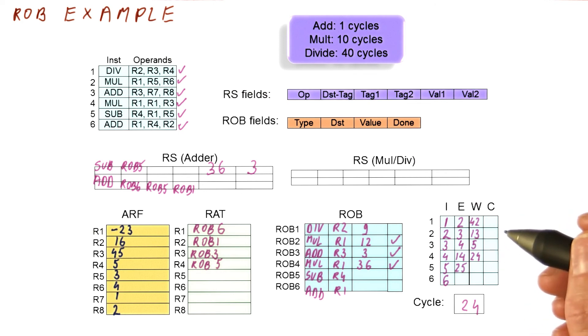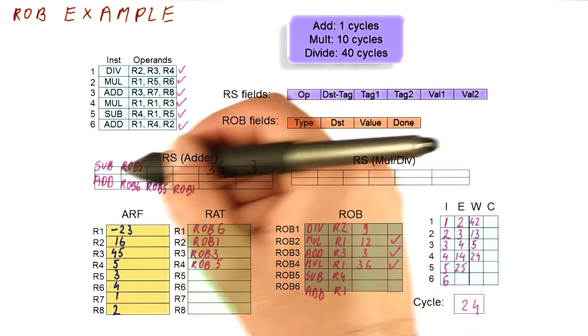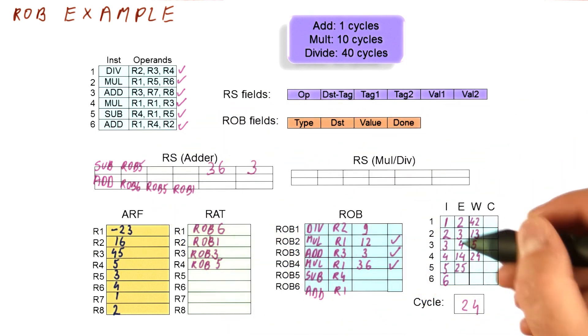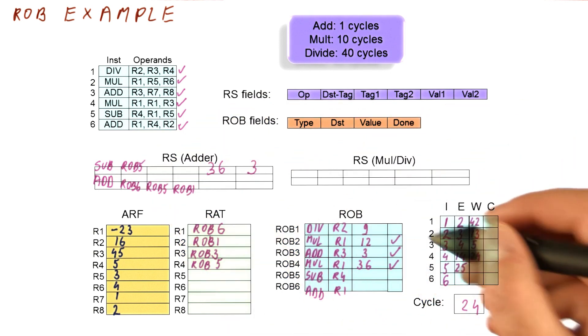In this cycle 24, however, the rob5 instruction will be dispatched. And it will begin again executing in cycle 25, so let's just move to cycle 25.